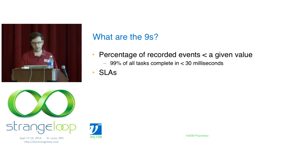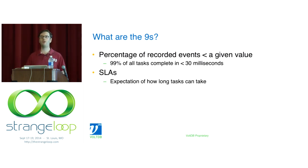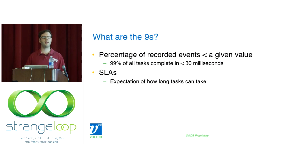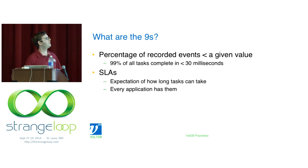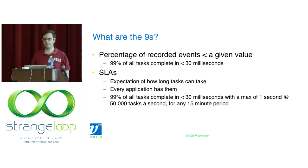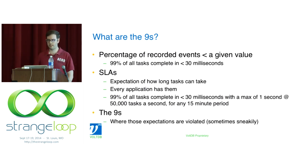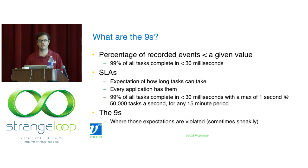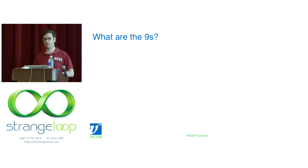Service level agreements are an expectation of how long you think tasks are going to take in your business process. Every application has these expectations. An example SLA would be: 99% of all tasks complete in less than 30 milliseconds, with a maximum of one second, at an arrival rate of 50,000 tasks a second. What's often left off is the arrival rate.